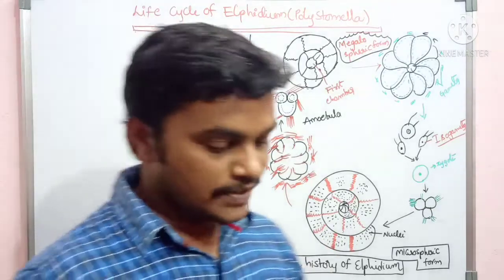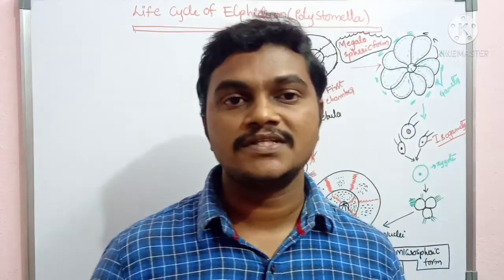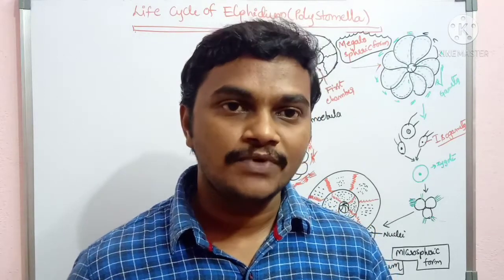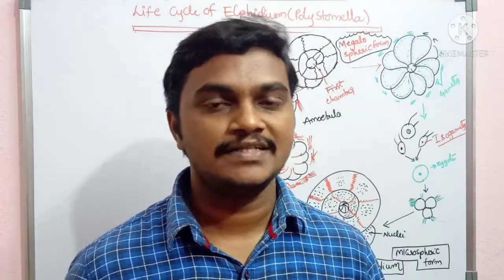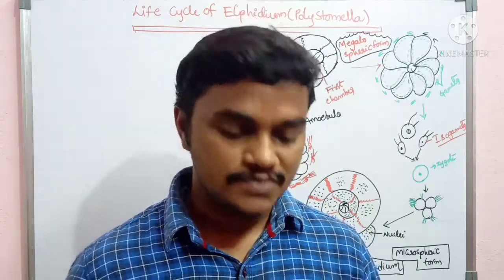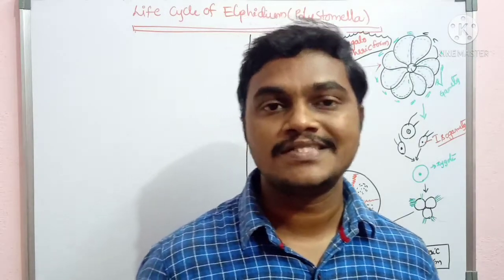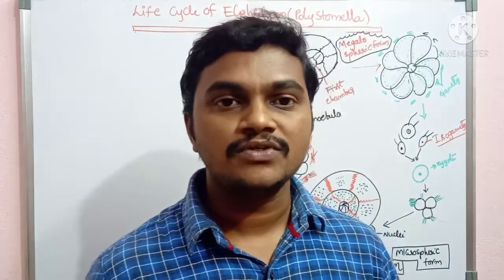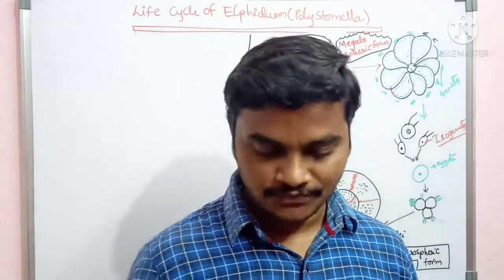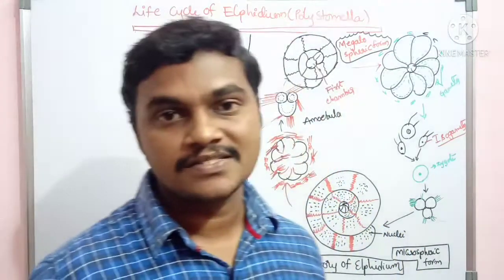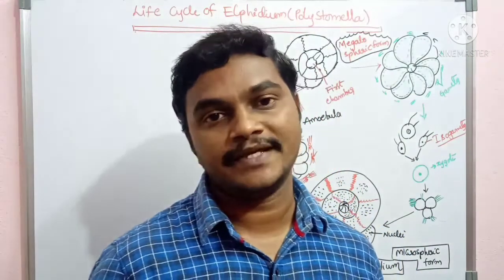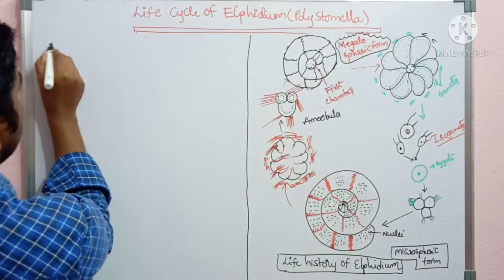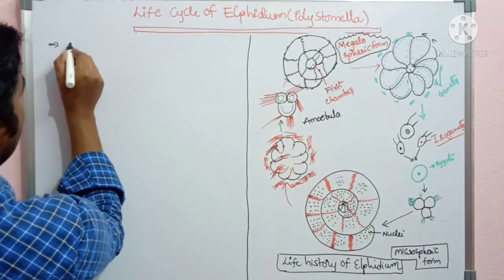It exists in two forms, that is why it is called a dimorphic form. Dimorphic form means any organism that exists in two forms. One is the asexual form and the other is the sexual form. The asexual form is called the microspheric form, and the sexual form is called the macrospheric form.